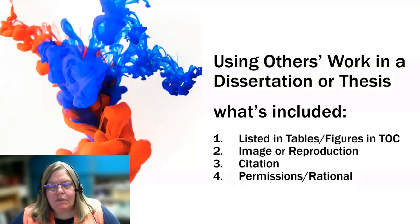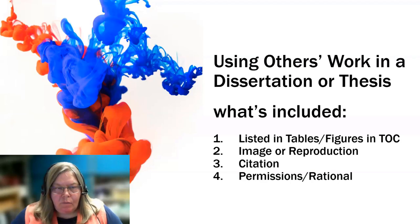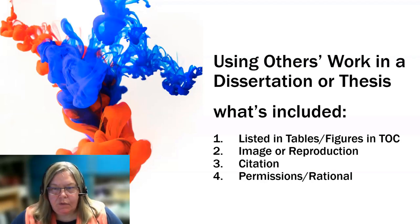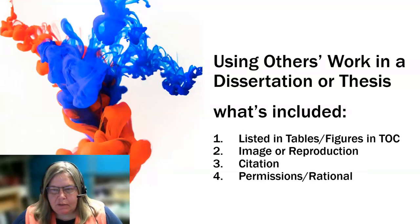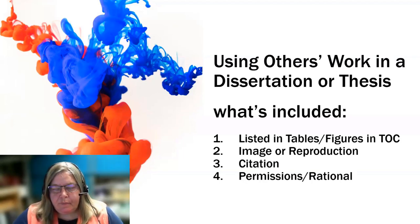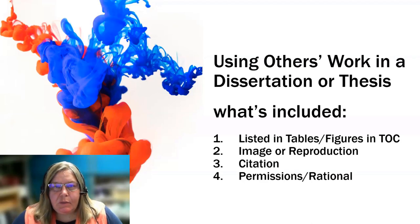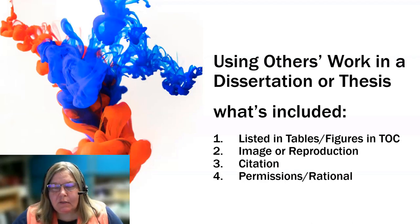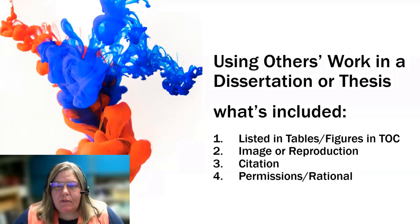When you use others' work in your dissertation, thesis, or scholarly project — once you've obtained permission or determined you didn't need it — there are a few things to include in the actual graduate work. It's going to be listed in your tables or figures, along with the actual image or reproduction of whatever you're using, and a full citation — because that citation helps the reader go to the exact thing you were seeing. And whatever permissions or rationale you've got, those will go in your appendices as well.